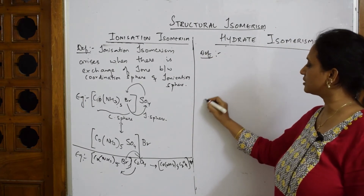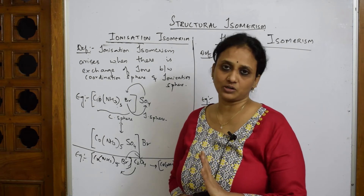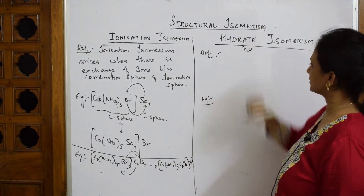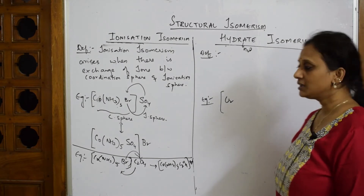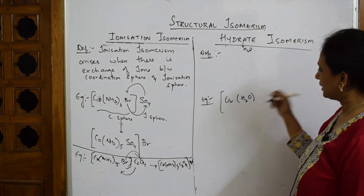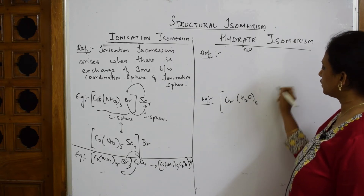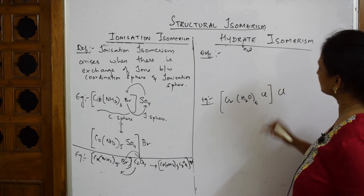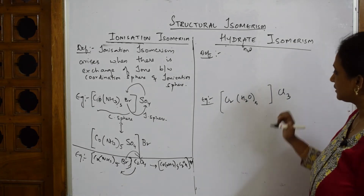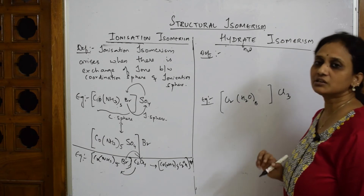For hydrate isomerism, one of the ligands must compulsorily be a water molecule — that's how you identify it. Hydrate simply means water. Take a chromium complex: [Cr(H2O)6]Cl3. Here, six water molecules together act as ligands and the complex is purple. This is your starting complex for hydrate isomerism.